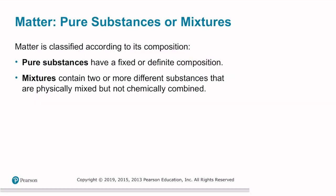In a broad sense, matter is classified according to its composition. It can be classified as a pure substance that has a fixed or definite composition, or a mixture which contains two or more different substances that are physically mixed but not chemically combined.